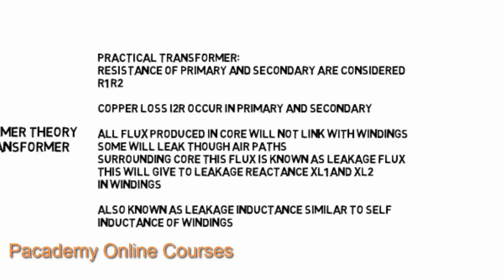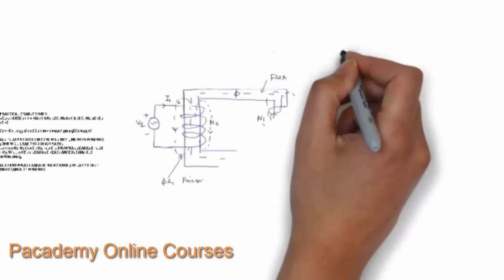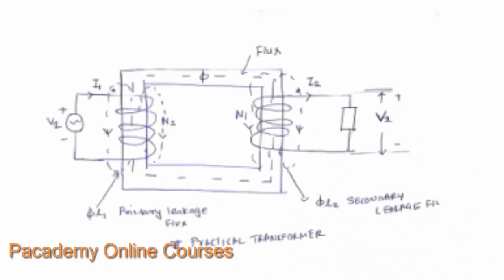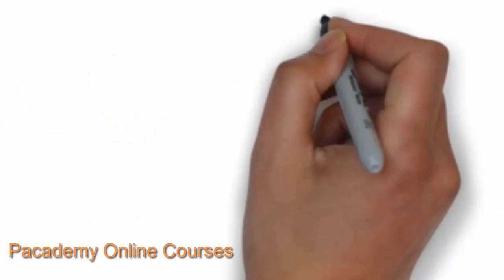These are the key differences between a practical and an ideal transformer — the practical transformer accounts for losses and heating. Looking at the diagram of a practical transformer, there is a core with a primary winding connected to an alternating source V1, causing current I1 to flow. The flux induced in the core does not fully link both windings; there is primary and secondary leakage flux shown by dotted lines. The secondary is connected to a load with output voltage V2 and current I2.